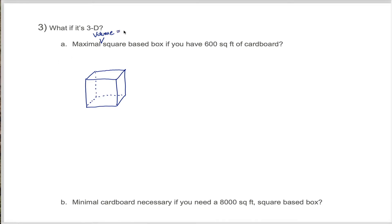When you think about volume, you might think about length times width times height, but the fact that it's square-based means that the length and the width of the bottom of this box are the exact same. So maybe I call that x. If x represents this length, it also represents the other side of the base because this base is a square. I don't know the height of the box, so I'll use the letter h to represent that. Instead of thinking about volume as length times width times height, I think about it as x times x times h, in other words, x squared h.